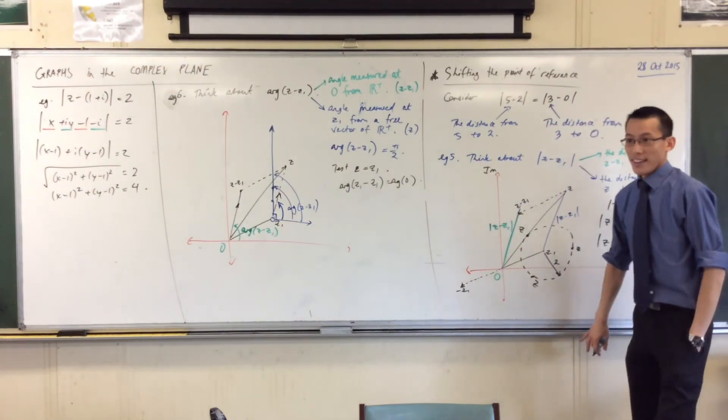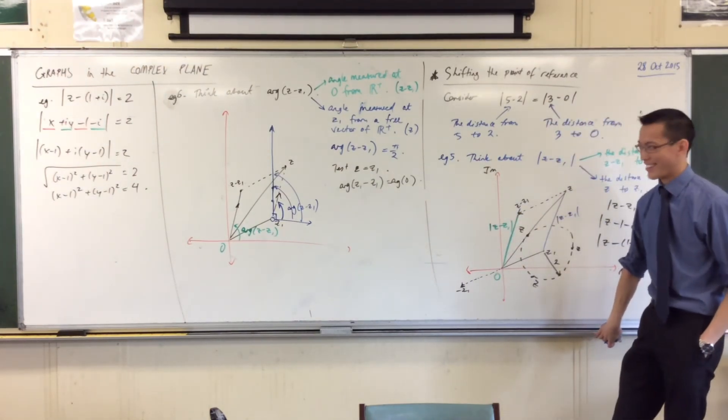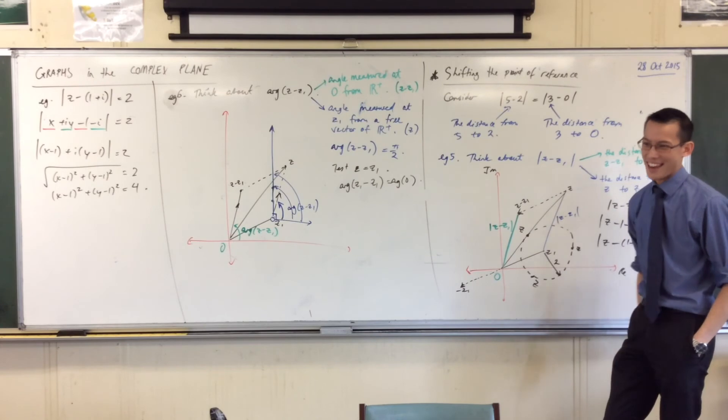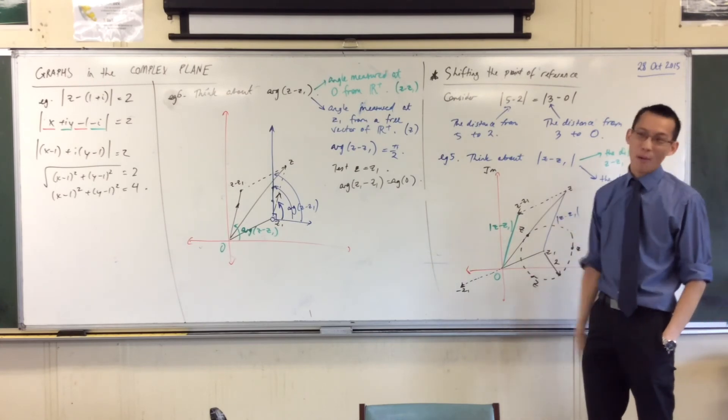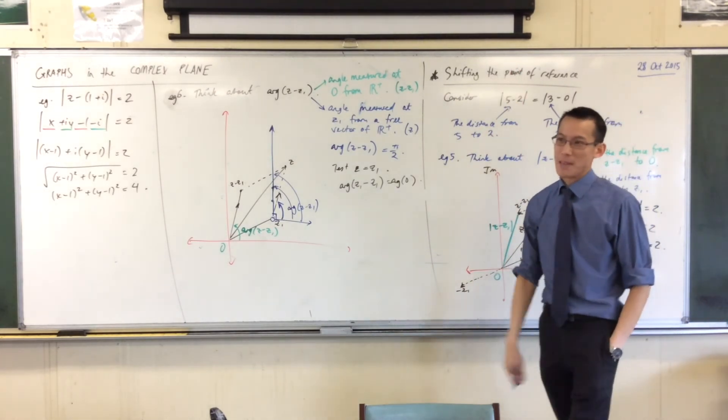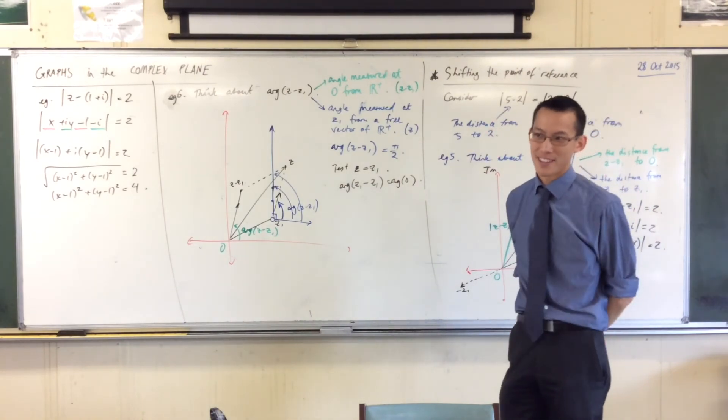It's like z1's the party point. Well, z1's the new point of reference. We're shifting the point of reference, so therefore, he becomes the new origin, as it were.